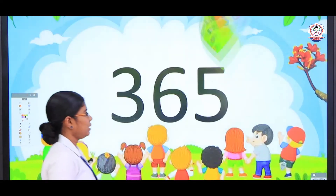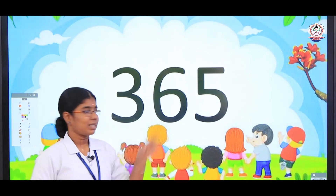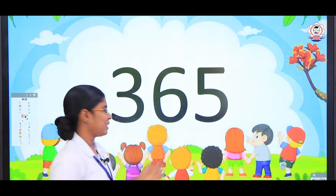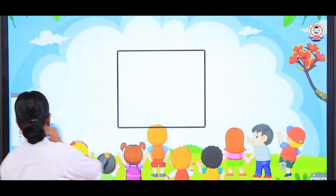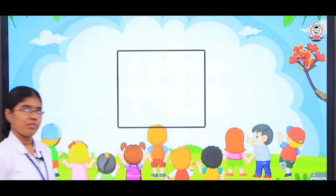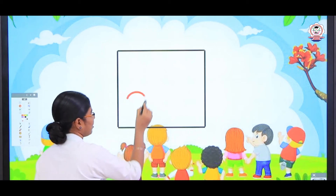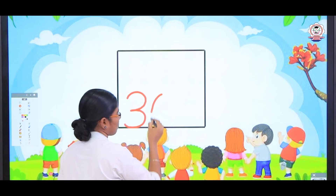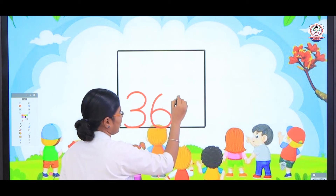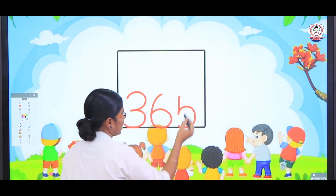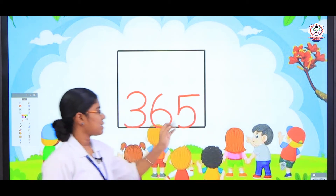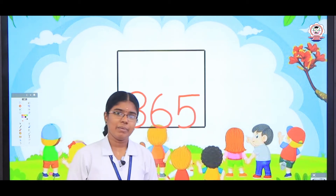Now see here, what number is this? 3, 6, 5 — 365. How to write this number? Look at the board carefully. 3, 6, 5 — standing, left open curve, left open curve and then a sleeping line. So 3, 6, 5 — 365.